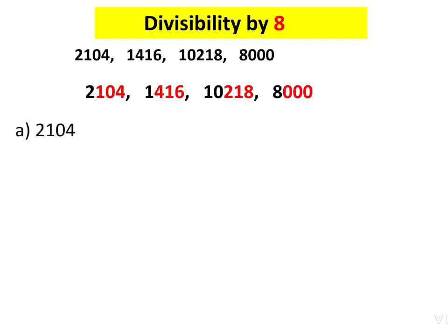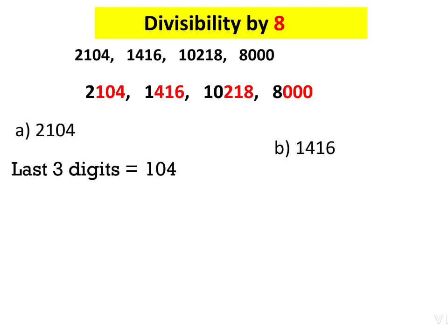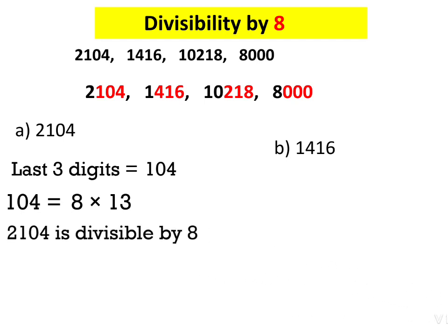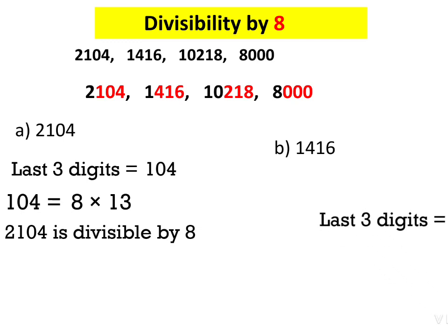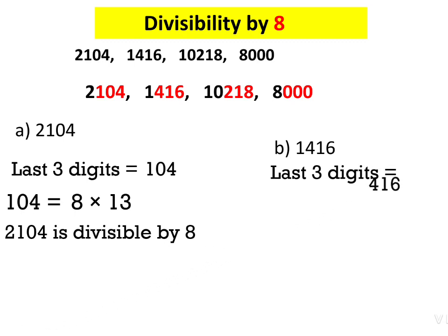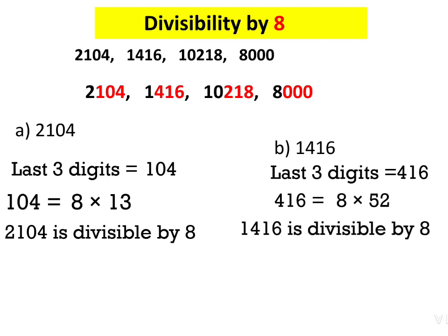Consider 2,104: the last three digits are 104. We don't know if 104 is a multiple of 8, so we divide 104 by 8. By the usual division method, 104 = 8 × 13. Therefore, 2,104 is divisible by 8. In the second case, 1,416: the last three digits are 416. We divide 416 by 8 and get 416 = 8 × 52. Therefore, 1,416 is also divisible by 8.